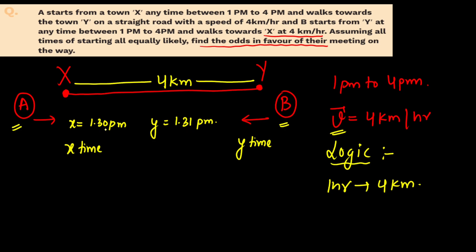But if you take the timestamp as sample space points, how many points are there? If you take 1:30, you can take 1:3001, then 1:3002 — there will be infinite timestamp points. The same goes for Y. If you apply the classical definition, the sample space is infinity. So we need a different approach.